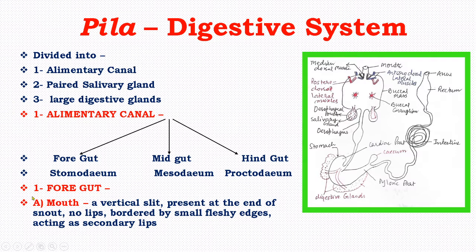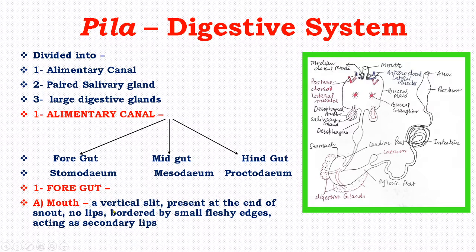The first part is the foregut, which includes the mouth — a vertical slit present at the end of the snout. There are no lips, but it is bordered by small fleshy edges which serve as secondary lips.